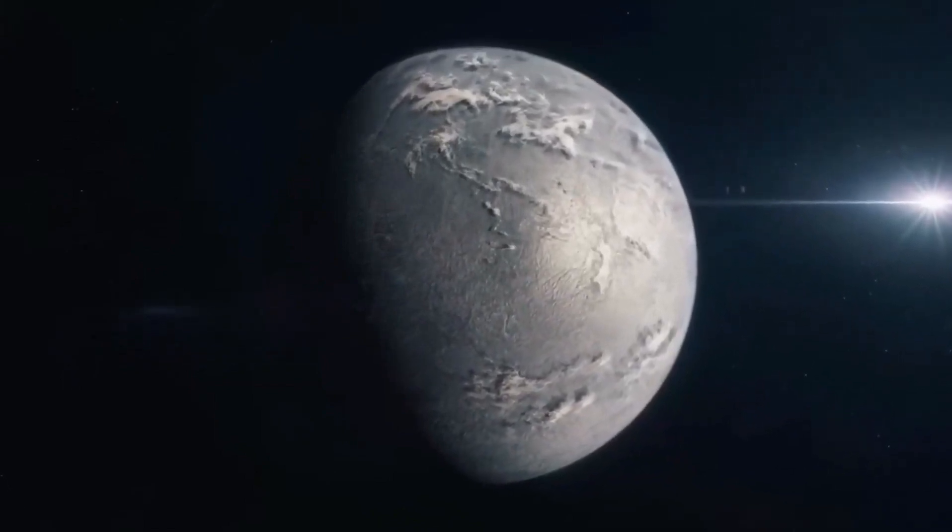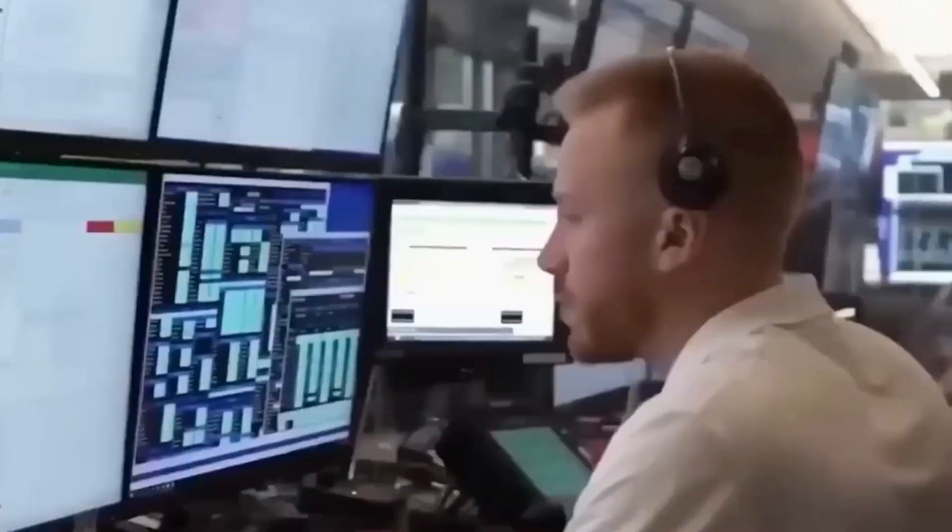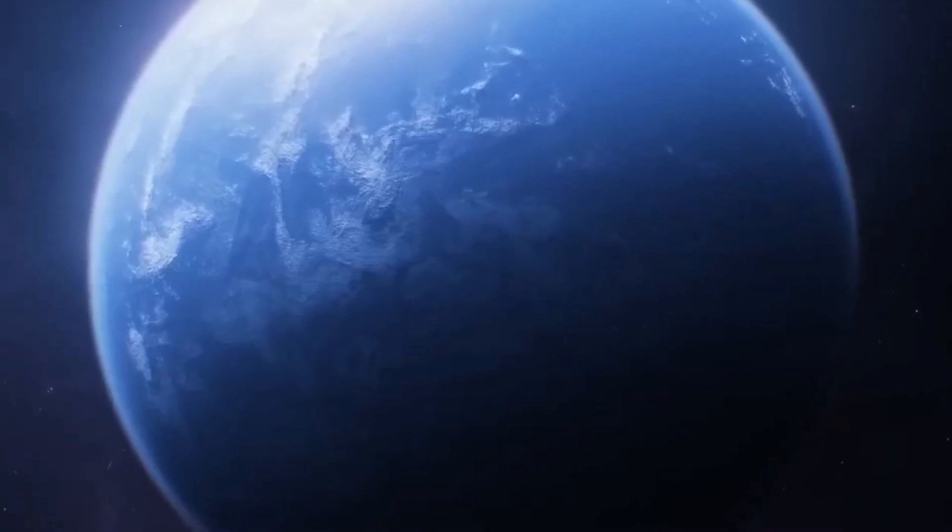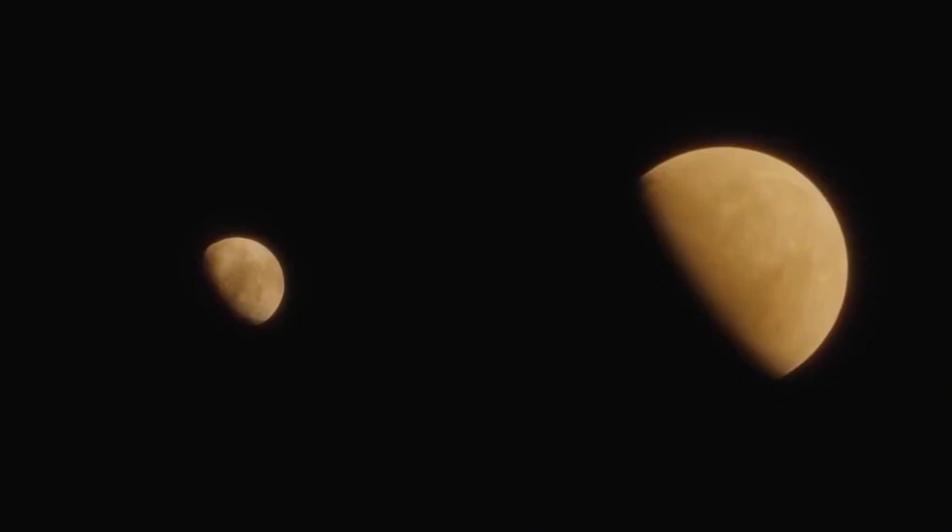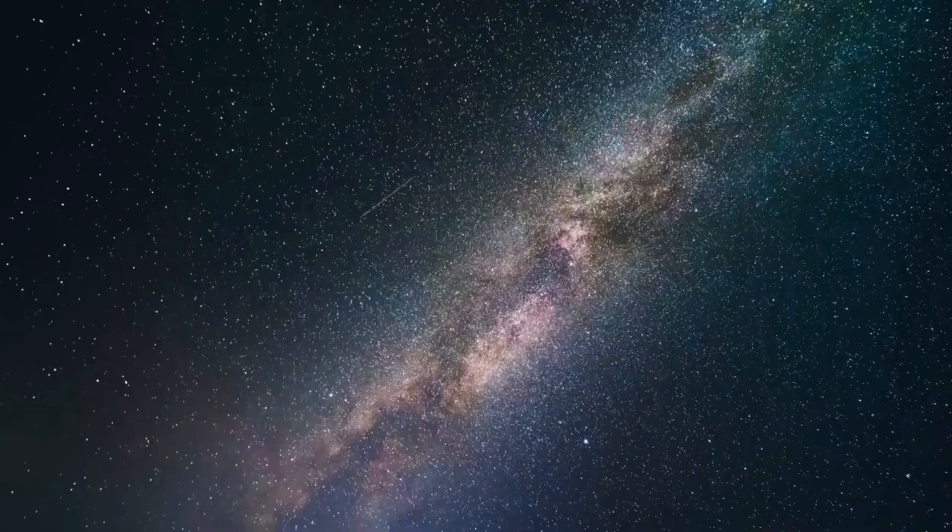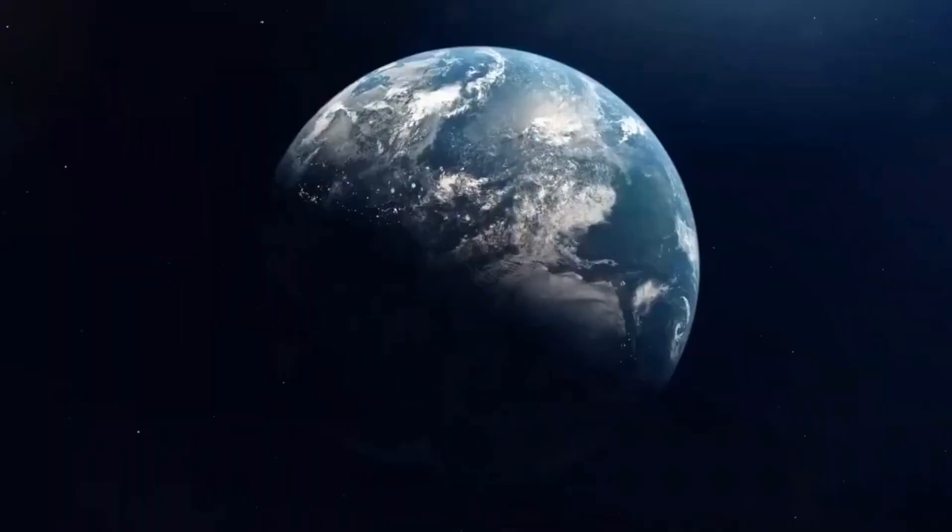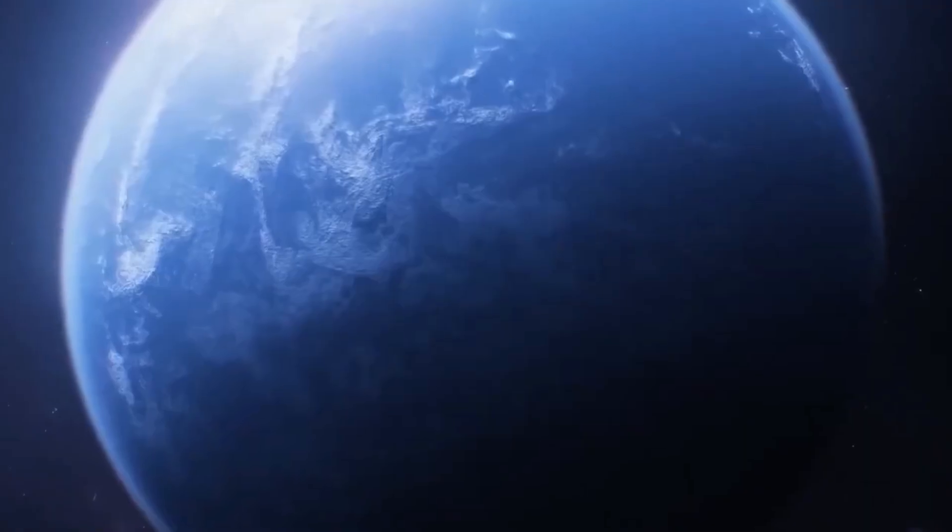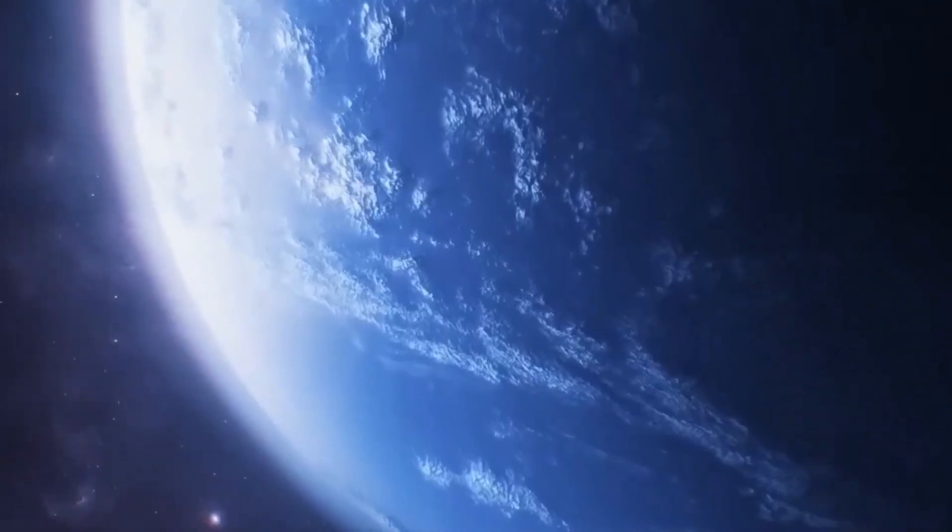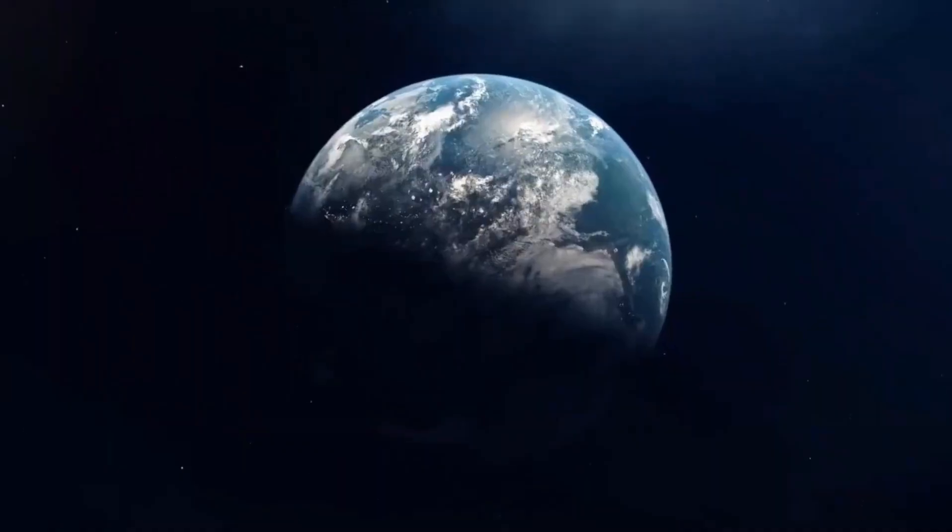This leads us to ask whether Proxima B could be a superhabitable planet. The habitability of an exoplanet is a complex issue, and it is not guaranteed that all of its parameters are suitable for life. Although there is evidence of a city with artificial lights and a suitable atmosphere on Proxima B, many other factors need to be studied. The ability of a planet to sustain life depends on a variety of factors that include its atmosphere, water, temperature, geological activity, and more.